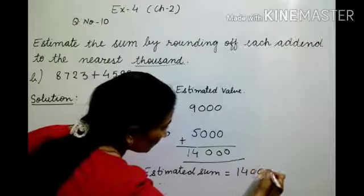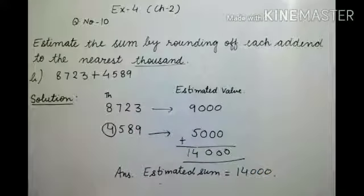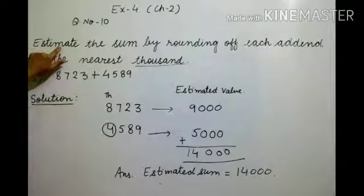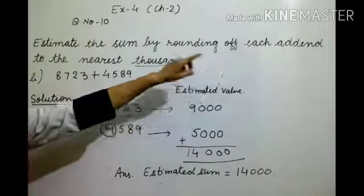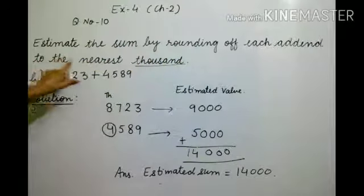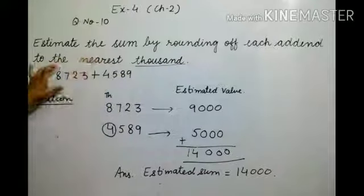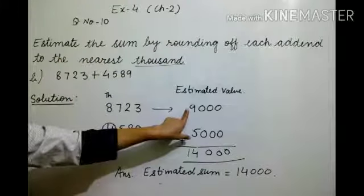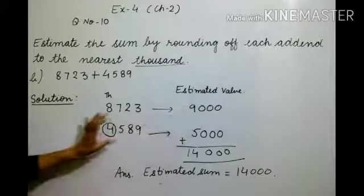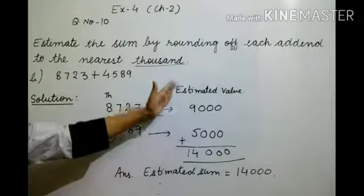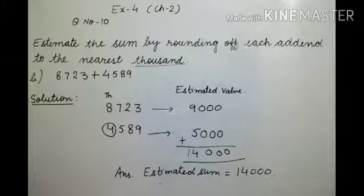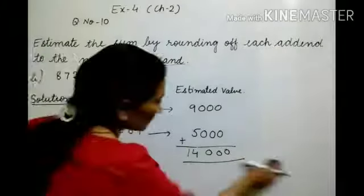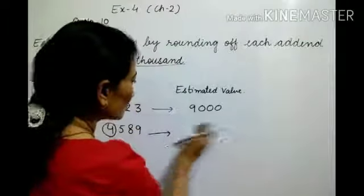The estimated sum is 14,000. To repeat: we round off each addend separately to the nearest thousand, then add the estimated values to get the estimated sum. The rest of the parts you will do as practice. Now let us take question number 11.